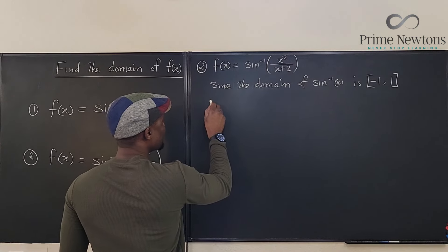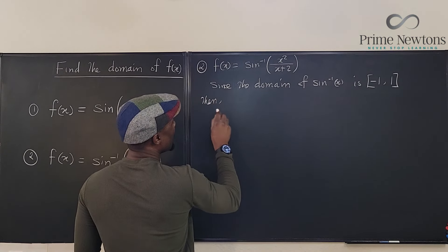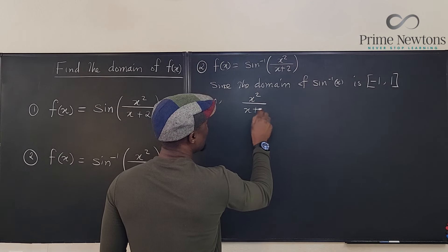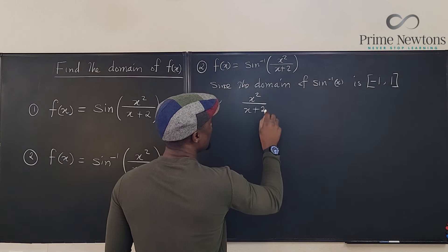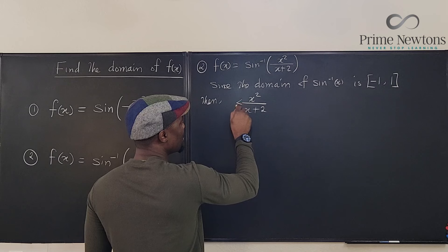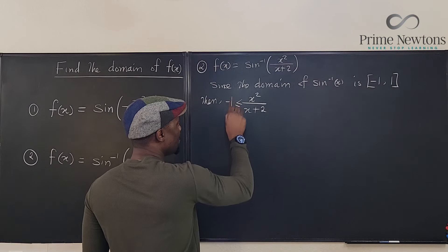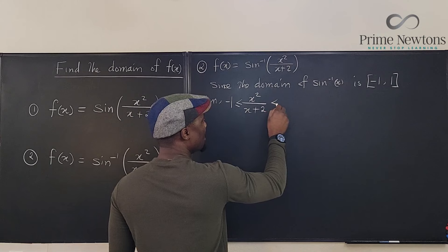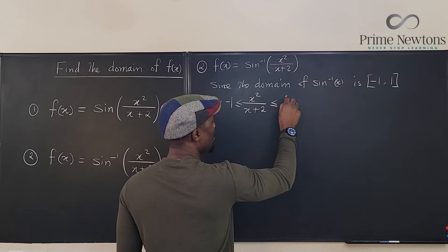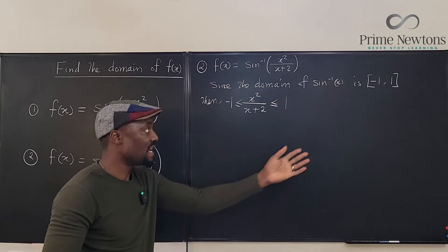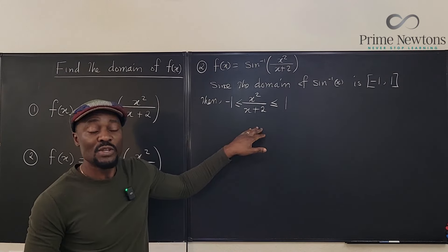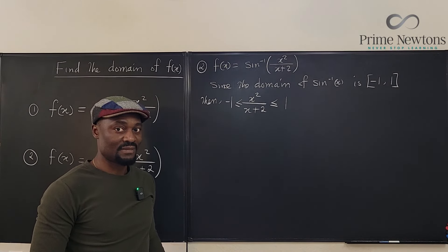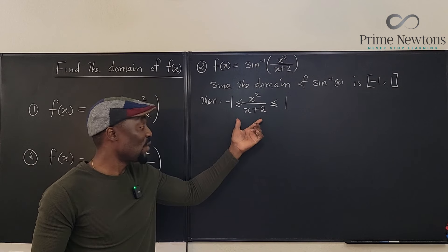So we have x squared over x plus 2. Since the domain of arcsine is from negative 1 to 1, it means whatever is here has to satisfy: negative 1 is less than or equal to x squared over x plus 2, which is less than or equal to 1. That's what the domain tells us we have to do — we just need to solve this compound inequality.